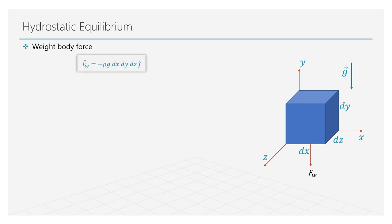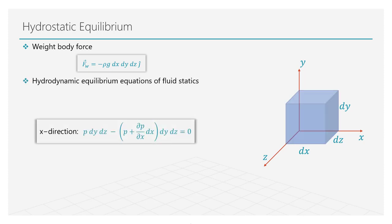The weight body force can be defined as the cube's mass times the gravity acceleration. Now, let's analyze the forces acting on the cube in the x direction only. Starting from the left side, we have that the pressure acting on the side of the volume creates a pressure force. On the right side, the pressure plus the small variation is applied in the opposite direction than the pressure we have on the left face of the cube. In order to be in equilibrium, the sum of these two forces needs to be equal to zero.